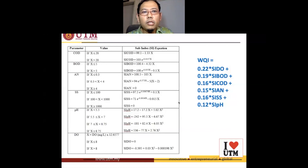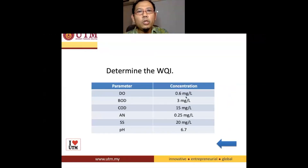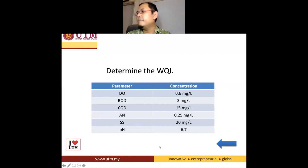I'd like you to do a little bit of mathematical exercises. I have a question for you — I want you to determine the WQI for this particular river. The correct answer is 66.217, whichever way you'd like to look at it.